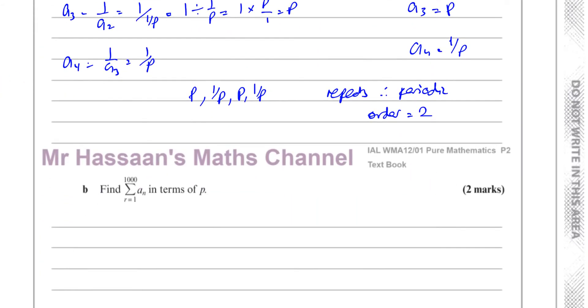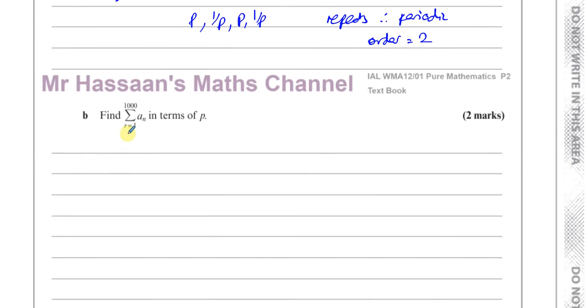And then it says, find the sum of the terms from the first to the thousandth term of this sequence in terms of p. So basically what we have to do is add together the first thousand terms of the sequence. So it's going to be p + 1/p + p + 1/p, all the way until you've got to the thousandth term.